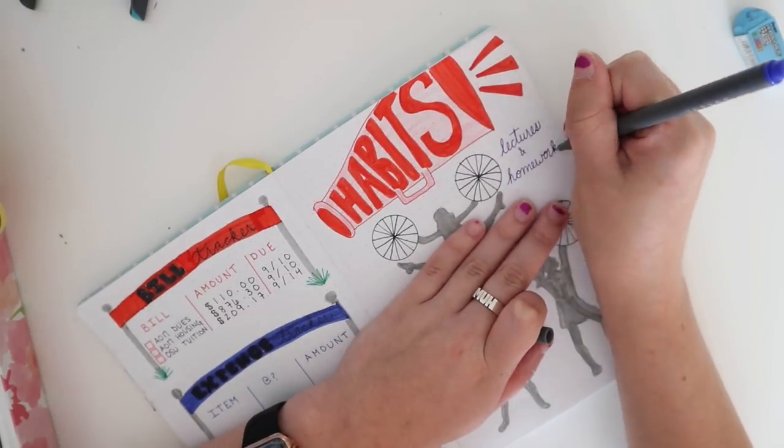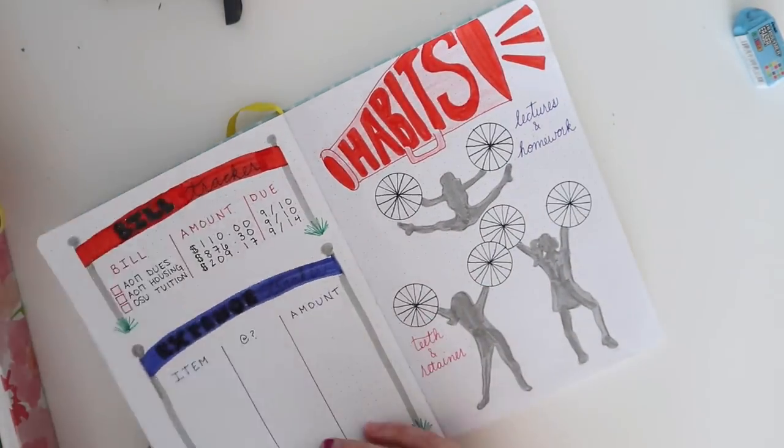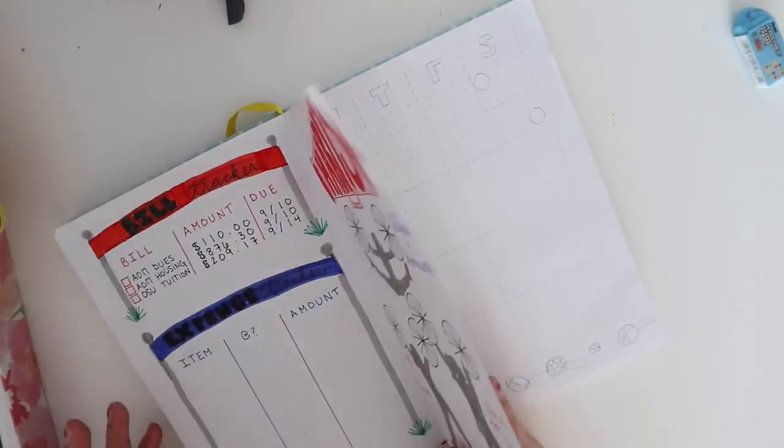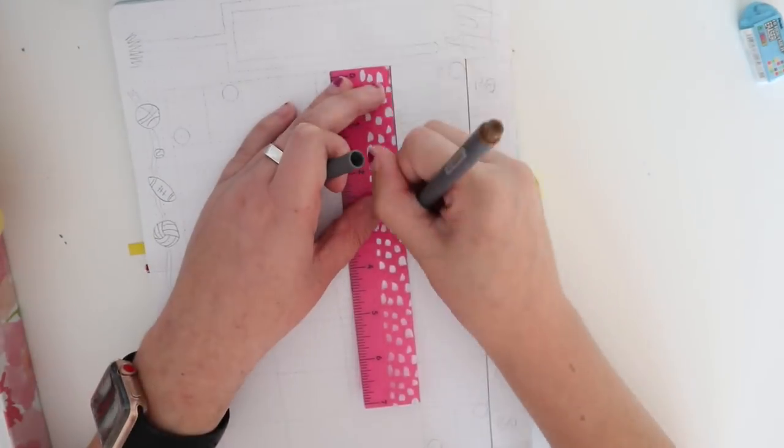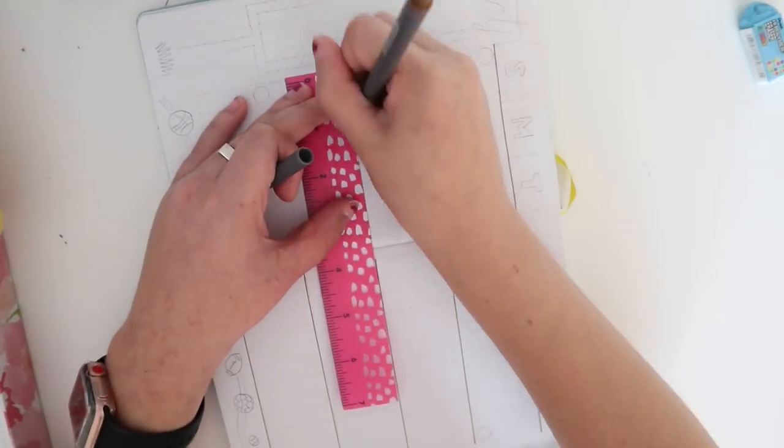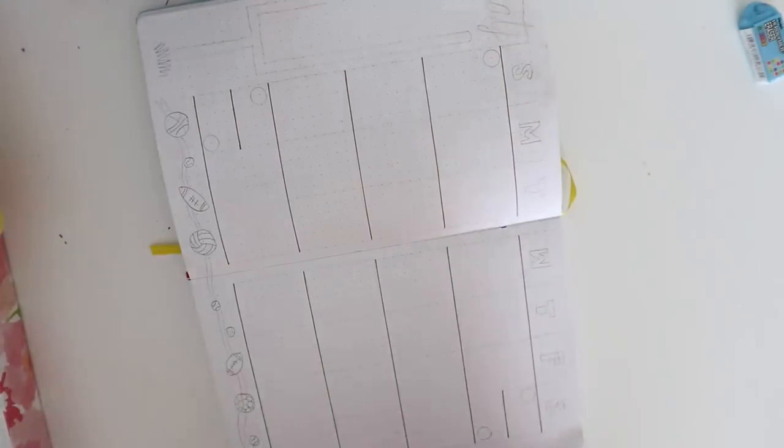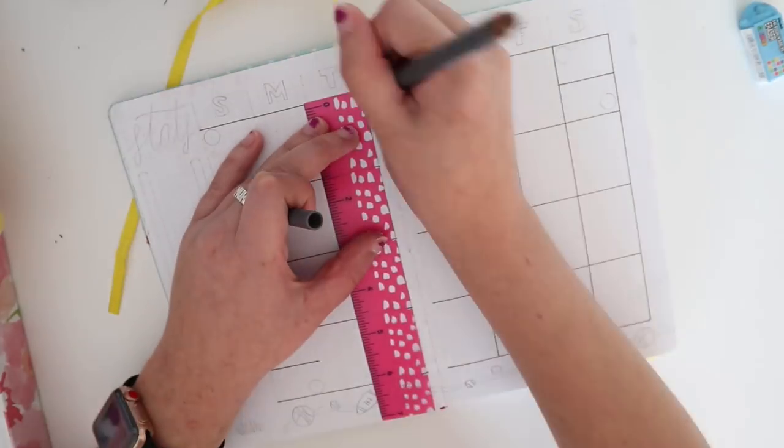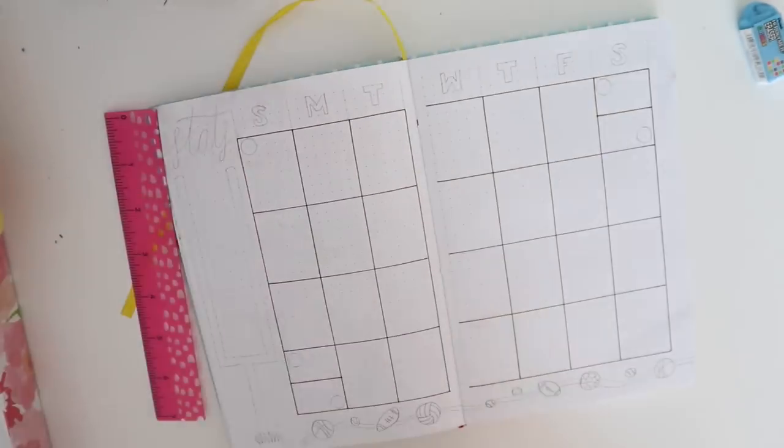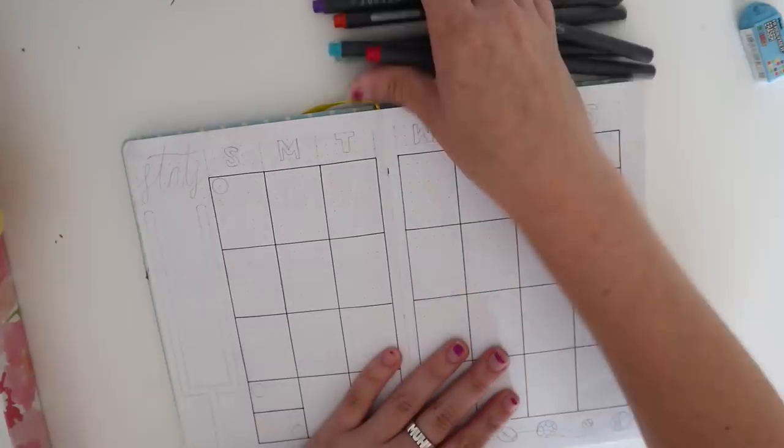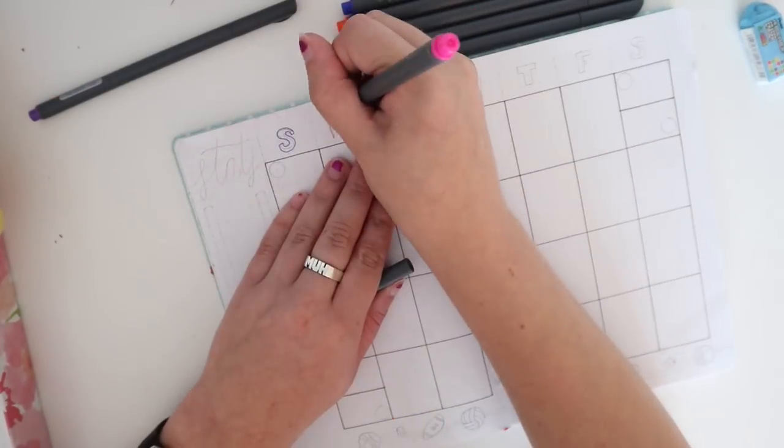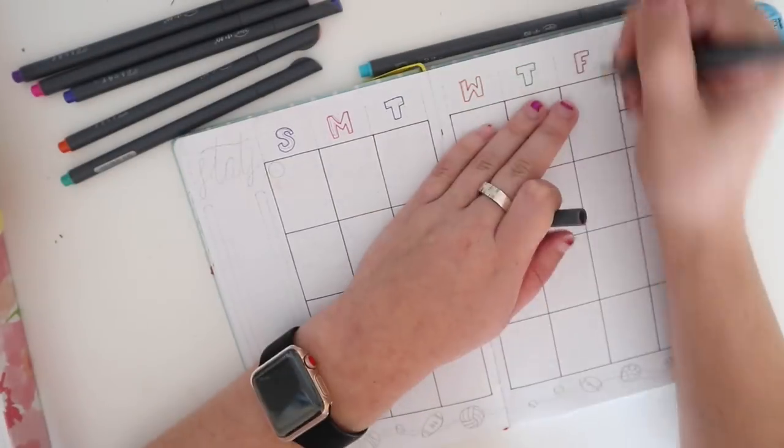My next page is my monthly view page. As y'all know I do a month at a glance at the beginning which is vertical. This horizontal spread which is a full month spread on two pages is used to track my YouTube videos and when I want to film and what I want to post when. That's why these boxes are always super big that way I can fit all of my ideas in them.